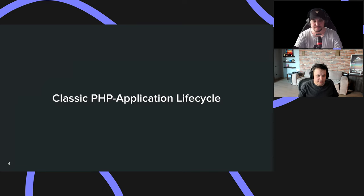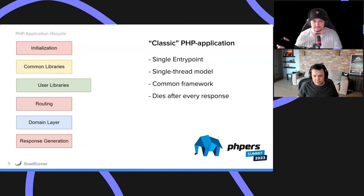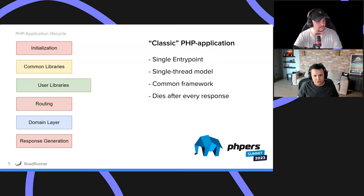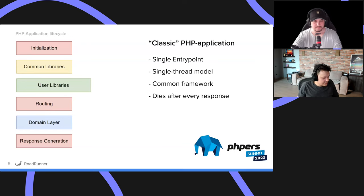Classic PHP application lifecycle — something we've been using for more than 20 years. To describe it, let's take a look at the application as a simple block diagram. We typically have some entry point which calls our index.php or something like that. It loads Composer, it loads some libraries, loads frameworks, then it loads your domain code, controllers, routing, and so on. So basically, you're doing the request, you load a bunch of those things, and then you execute them to provide output for the user.